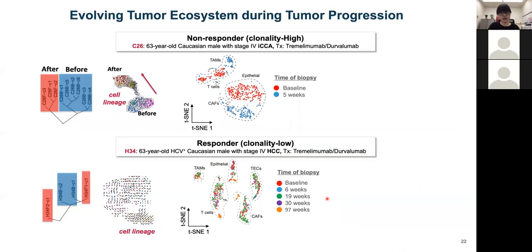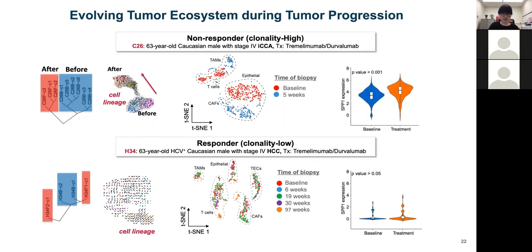To determine tumor evolution in response to treatment, I performed hierarchical analysis and trajectory analysis of tumor functional clones and testing analysis of the whole tumor ecosystem. In a non-responder patient treated with anti-PD-L1 and anti-CTLA-4 drugs, the tumor had a polarized tumor cell population as well as a polarized tumor ecosystem. For another non-responder HCC patient also treated with anti-PD-L1 and anti-CTLA-4, the tumor landscape over 97 weeks was relatively stable. Strikingly, SPP1 was significantly elevated in malignant cells after immunotherapy treatment in non-responders, highlighting the role of SPP1 in tumor evolution.